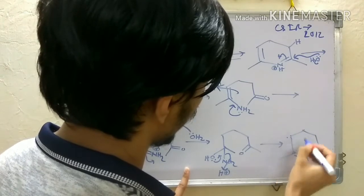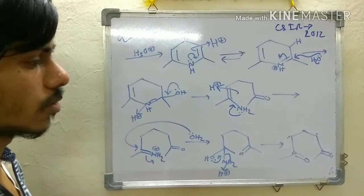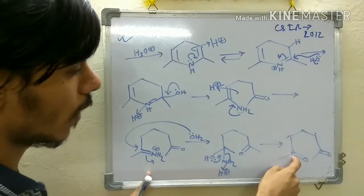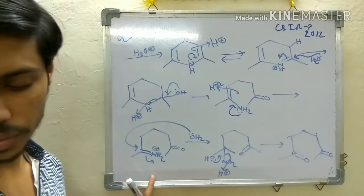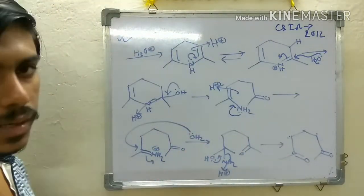This is 1, 2, 3, 4, 5 - a 2,5-diketone. So you ultimately get a 2,5-diketone out of this pyridine nucleus.